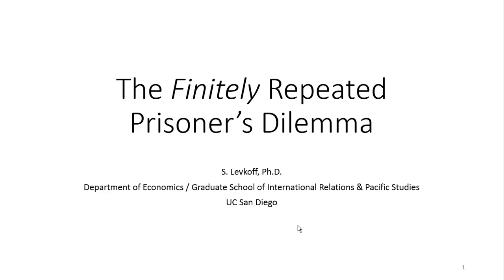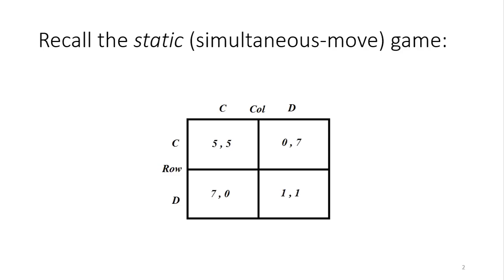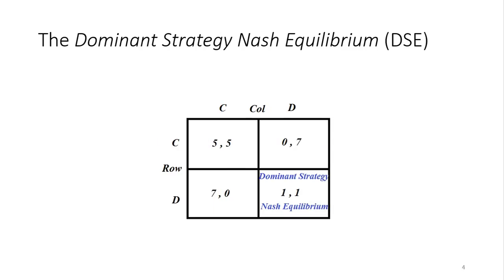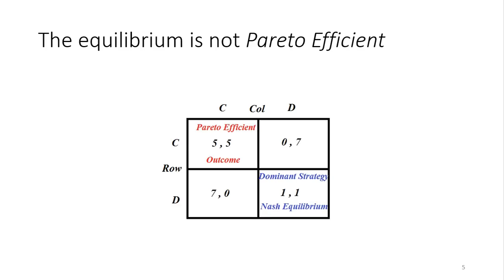First off, recall that we had done quite a bit of work looking at the static version of this game. Things look cosmetically a little different here than when we first looked at the situation where Bonnie and Clyde tried to rob a bank and the DA had turned them against each other. But these cosmetic differences don't really change the nature of the game. Each player has two strategies — C and D for cooperate and deviate. Deviate is the dominant strategy; it strictly dominates cooperate not just for the row player, but also for the column player. So we have this characteristic dominant strategy Nash Equilibrium, and the equilibrium is not actually Pareto efficient.